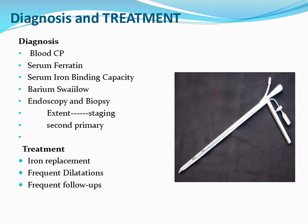Endoscopy is essential to rule out malignancy, with biopsy from suspicious areas. Treatment is iron replacement — find the cause of anemia, which may be hemorrhoids in the GIT tract or menorrhagia in females. Frequent dilatation of the cricopharyngeus is performed, and regular follow-up is maintained.